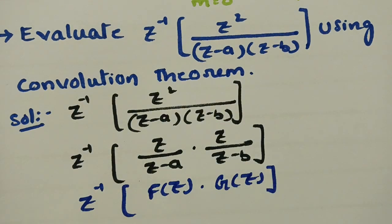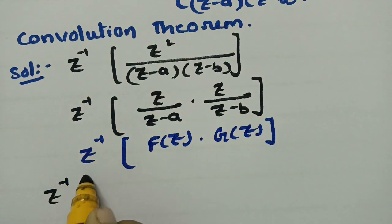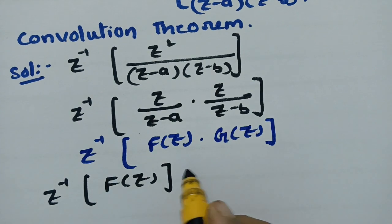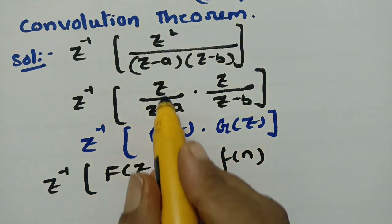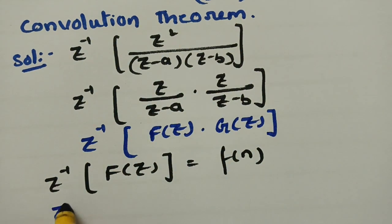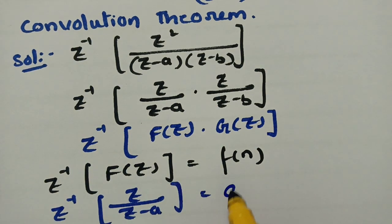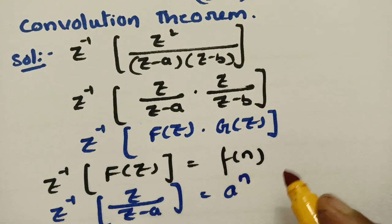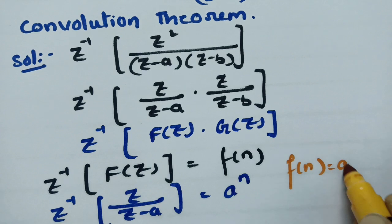Now, finding the inverse Z transforms of F of Z and G of Z. Inverse Z transform of F of Z is F of n. F of Z is Z by (Z minus A), and the inverse Z transform of Z by (Z minus A) is A power n. So F of n equals A power n.